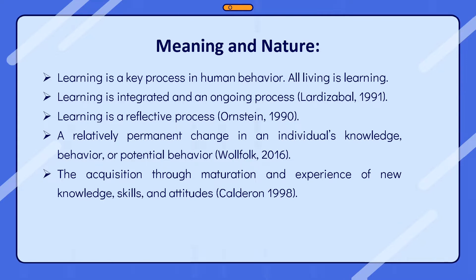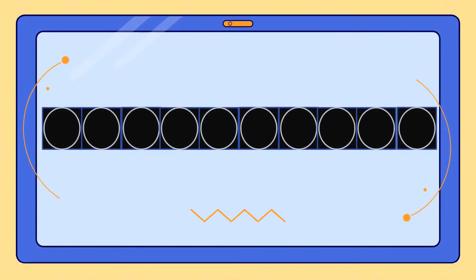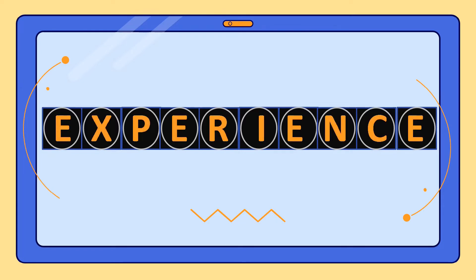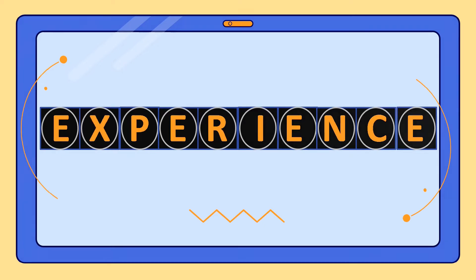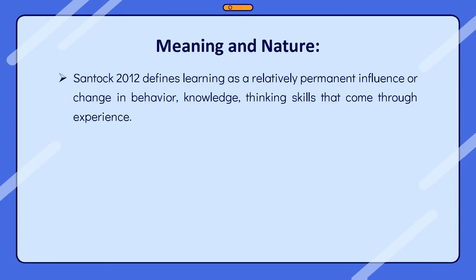There is that one word that could explain and prove one's learning — can you guess? It is the word experience. Santok defines learning as a relatively permanent influence or change in behavior, knowledge, and thinking skills that comes through experience.